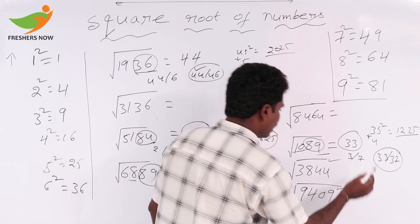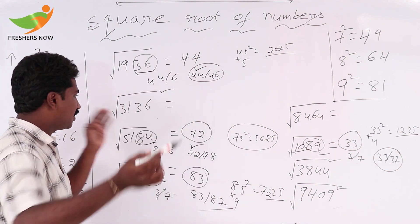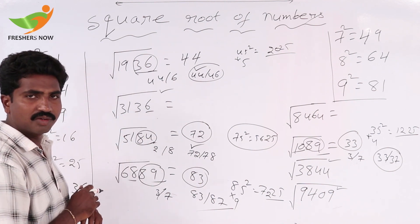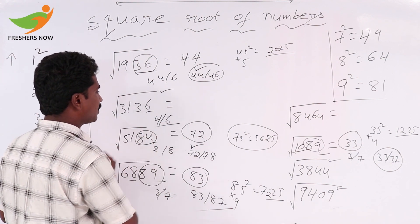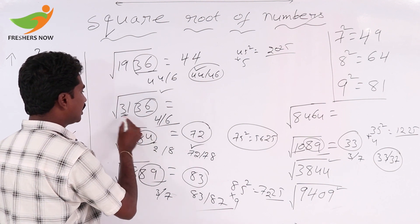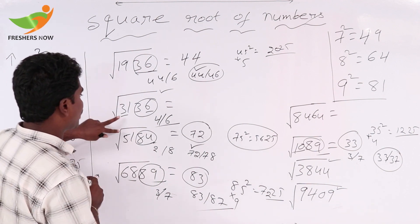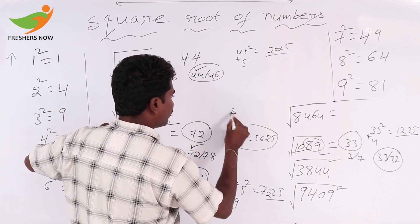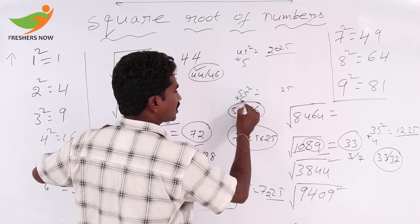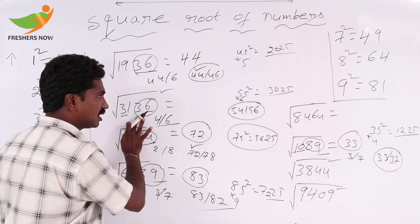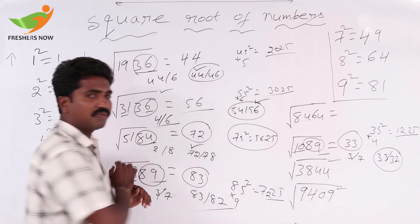Try to solve: square root of 3136. Units place value is 6. 4 squared is 16 and 6 squared is 36, so you can take either 4 or 6. Keep 2 digits away: 31 is there. 5 squared is 25 and 6 squared is 36, so the answer is either 54 or 56. In between these two, 55 is there. 55 squared: 5 squared is 25, and 5 times the next number 6 gives 30. So 55 squared is 3025. Since 3136 is greater than 3025, we can take 56. The square root of 3136 is 56.